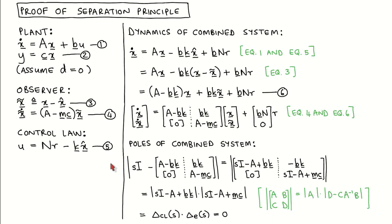The separation principle says that the poles of the combined system — that is, the plant with the state feedback and observer — are the combinations of the closed loop regulator poles and the observer poles, designed separately. The idea of the proof is to combine the descriptions of all the components of the full system into one state variable description, and then calculate the poles of the combined system.